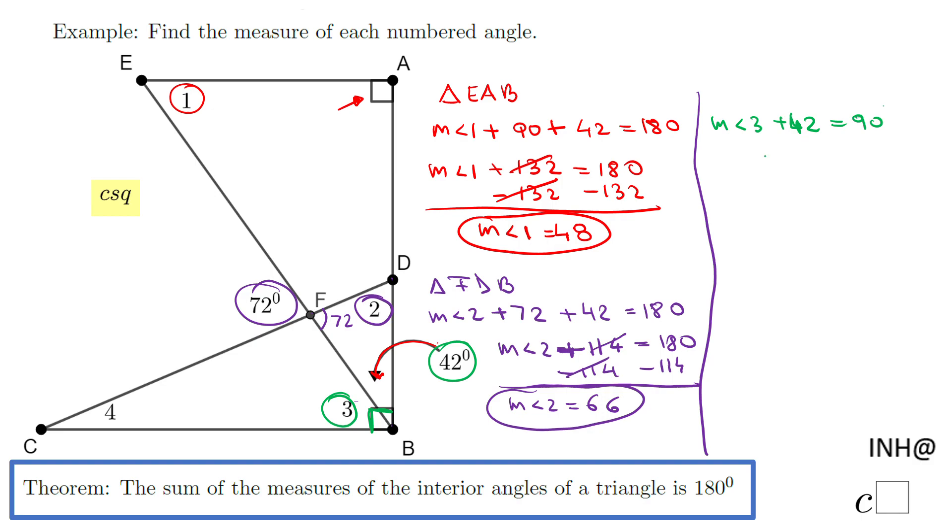The last step to find angle 3 is subtract 42 degrees, and that will be 48 degrees. We have one more angle: angle 4.